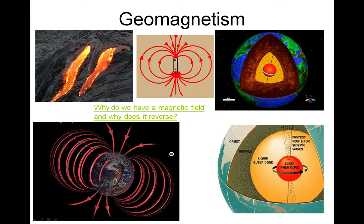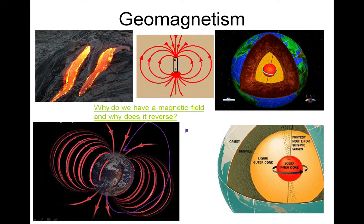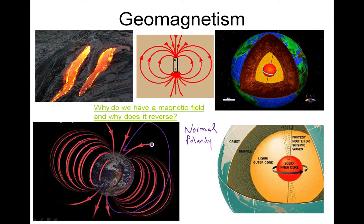The Earth's inner core is spinning faster than the rest of the Earth — that generates the magnetic field. Normally, it goes out of the South Pole and into the North Pole. That is called normal polarity. It's what it is now, what it normally is. We can't see it; it's invisible, but compasses can detect it.